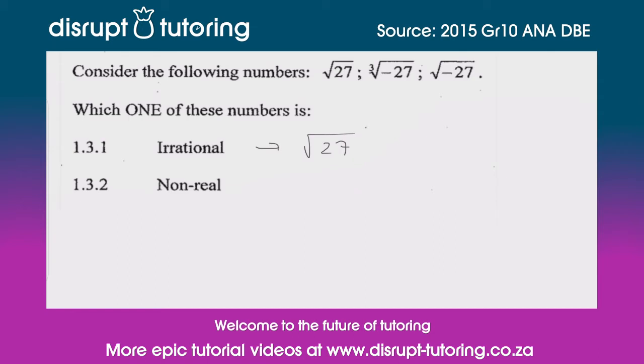That opens up the whole complex number system, which you'd probably learn in AP Maths. But if you're in core maths, you don't necessarily need to worry about that complex number system. A square root of a negative number is non-real. It does not exist. I would even suggest putting that into your calculator and seeing what the calculator says. In this case, your non-real number is the square root of negative 27.